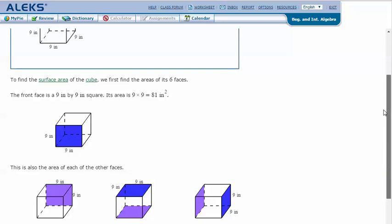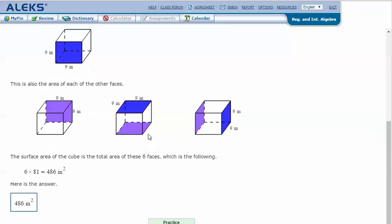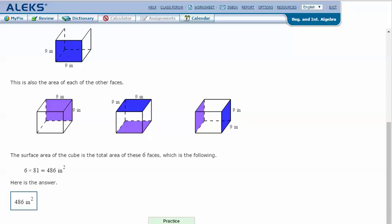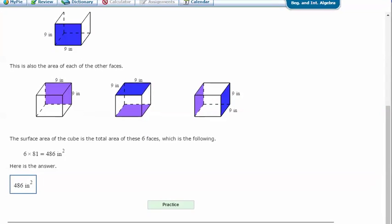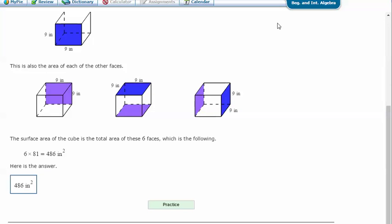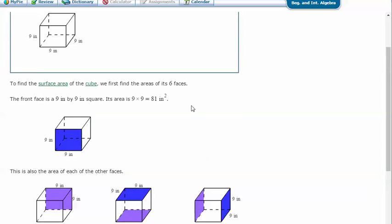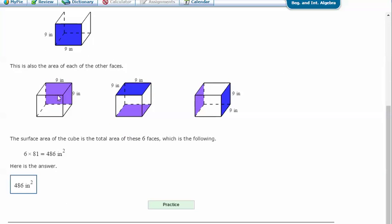To find the surface area of the cube, we first find the areas of its six faces. The front face is a nine by nine square. This is also the area of all the other faces. Because with a cube, they're all going to be the same. The front is nine by nine, so is the back.